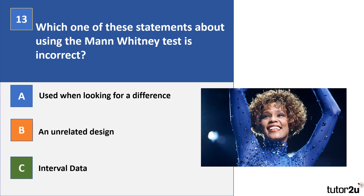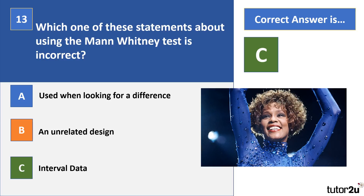Question 13. Which one of the statements about using the Mann-Whitney test is incorrect? A, it's used when looking for a difference. B, an unrelated design. C, interval data. The correct answer is C — Mann-Whitney requires at least ordinal level data. An unrelated design refers to use of the independent measures design, whereas a related design refers to matched pairs or repeated measures.